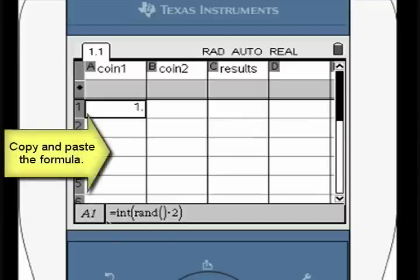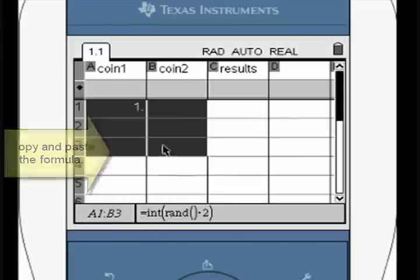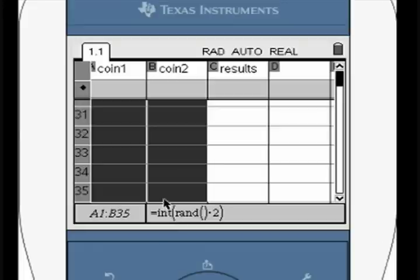Copy and paste the formula to other cells or use the fill down option. Only the first two columns get the random number formula.